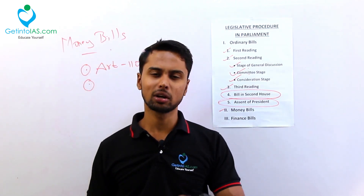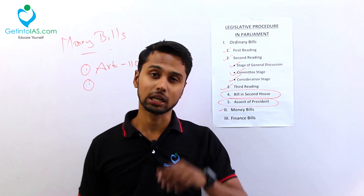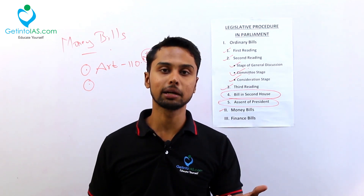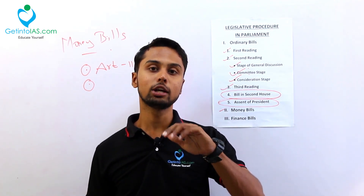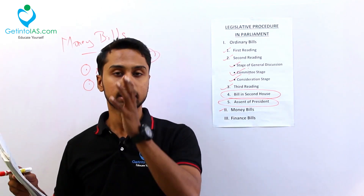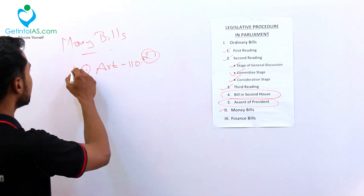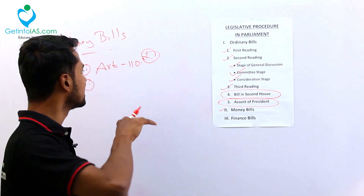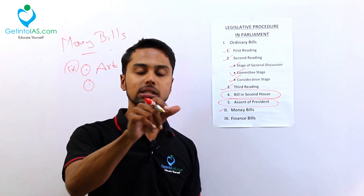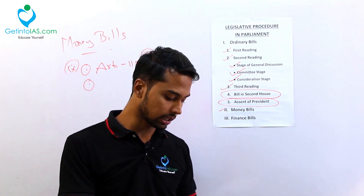There is no exact definition of money bill because it depends on the government. For example, the Aadhar bill - Aadhar bill is a money bill. The Aadhar bill has been endorsed by the government as a money bill. So money bill is concerned with the respective government. The definition of money bill is not confined - it is a very holistic view. Literally, anything related to the term money or finance will be passed as a money bill.